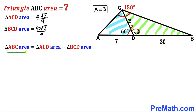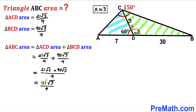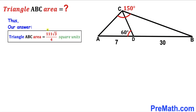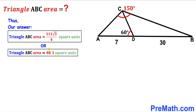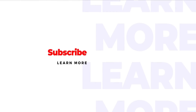Now we calculate the total area of triangle ABC: 21 root 3 over 4 plus 90 root 3 over 4 equals 111 root 3 over 4 square units, which is approximately equal to 41.1 square units. Thanks for watching, and please don't forget to subscribe to my channel for more exciting videos. See you in the next video!